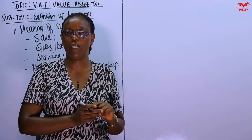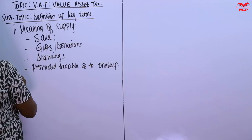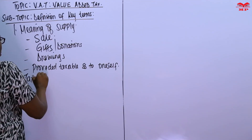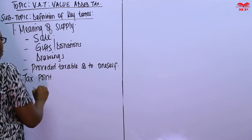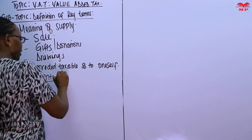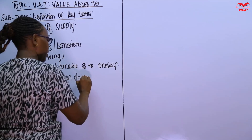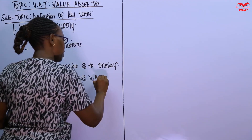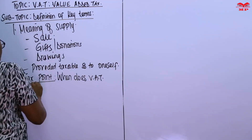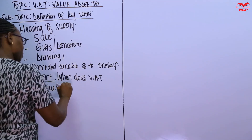Anytime a supply happens, we qualify to charge VAT — we shall later call that output VAT. The other key term we are going to look at is tax point, which simply means: when does VAT become due and payable?